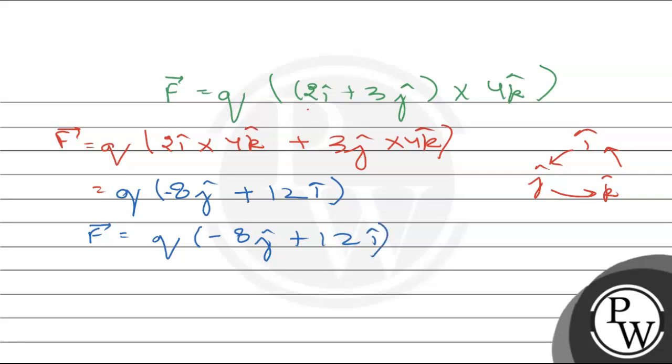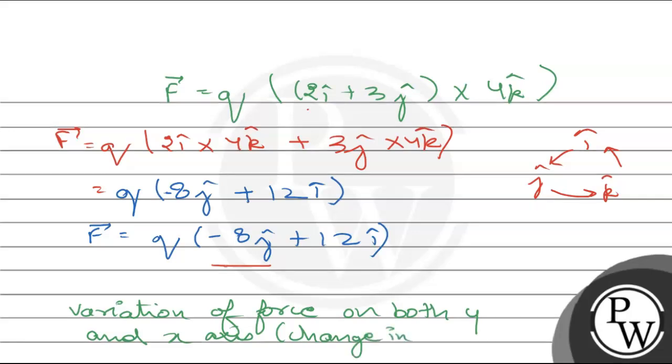Now, we can see that there is variation of force on both y and x-axis. Because j represents y and i represents x-axis. That is, there is change in direction of magnetic force. So, there will be change in path of the charge particle.